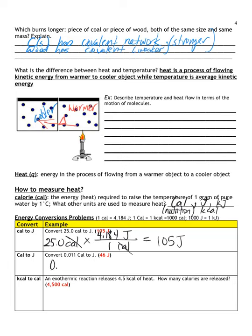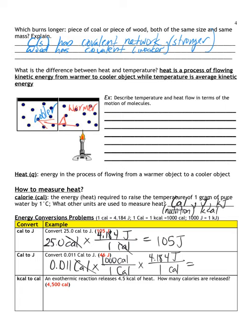In the next conversion, we take 0.011 big-C Calories and convert to joules. One big-C Calorie equals 1,000 small-c calories. So I cross-cancel big-C Calories to get small-c calories, then convert to joules using 4.184 joules per calorie. Calculating this out gives 46 joules as the final answer.